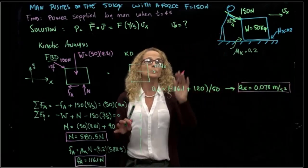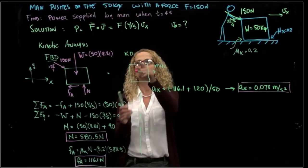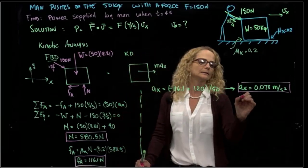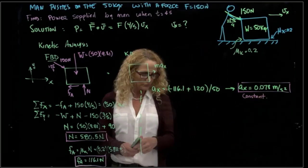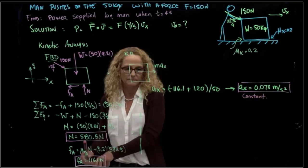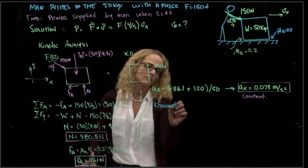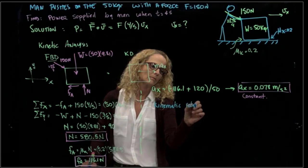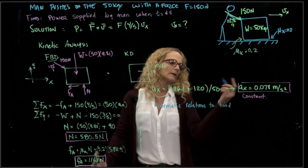If the man is pushing that crate constant, with a constant force for 4 seconds, we can say that this is where the acceleration is constant. If the acceleration is constant, we can use the kinematic relations to find the velocity.